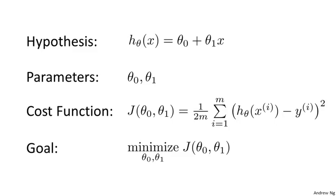Here's our problem formulation as usual with the hypothesis, parameters, cost function, and our optimization objective. Unlike before, unlike the last video, I'm going to keep both of my parameters theta 0 and theta 1 as we generate our visualizations for the cost function.